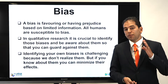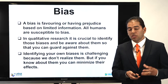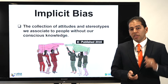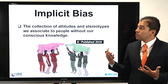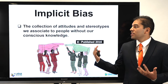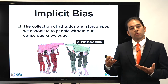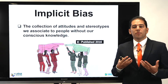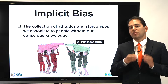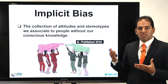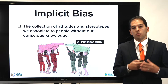The first bias is the implicit bias — the collection of attitudes and stereotypes we associate with people without our conscious knowledge. Imagine you are interviewing somebody or observing a group of people. By default, unconsciously, we start to classify people, categorize them, and stereotype them. You need to be very aware about this implicit bias to make sure that you really understand the people without stereotyping them.